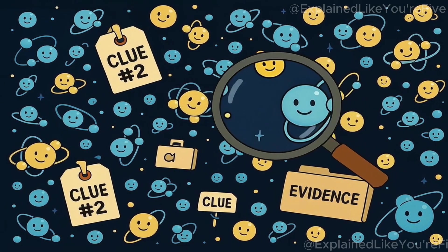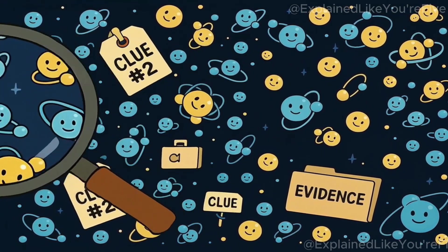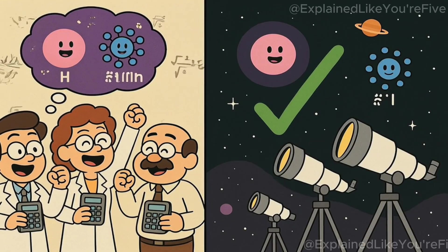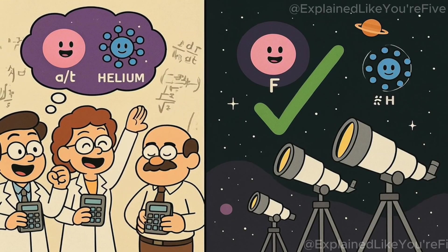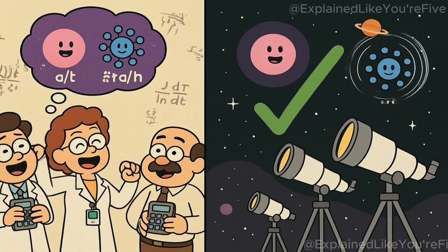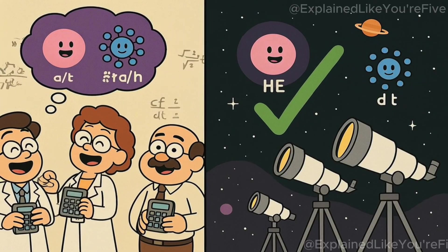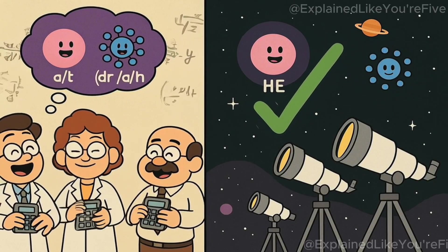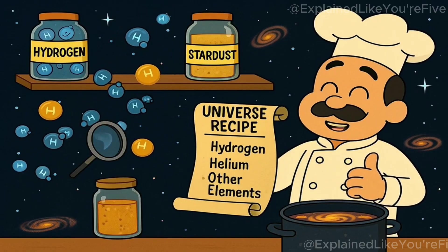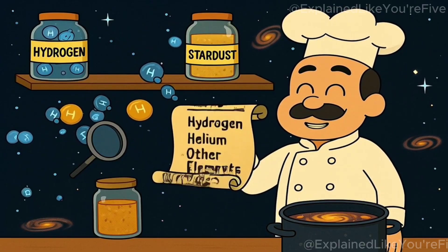Another piece of evidence comes from the abundance of hydrogen and helium in the universe. When scientists calculate how much hydrogen and helium should have been created in the first few minutes after the Big Bang, their predictions match almost exactly what we observe in the universe today. It's like finding a recipe that perfectly explains the ingredients that we see around us.